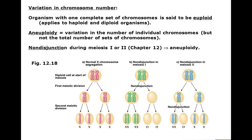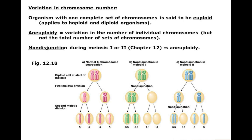Variation in chromosome numbers: an organism with one complete set is euploid; aneuploidy is variation in individual chromosome numbers. Non-disjunction during meiosis 1 of sex chromosomes may not be lethal. If the egg lacks an X and is fertilized by X-bearing sperm, the result is XO — Turner syndrome. If fertilized by Y, the result is XYY or XXY. If the egg has two X chromosomes and is fertilized by Y, this is XXY — Klinefelter syndrome; or by X, giving XXX.